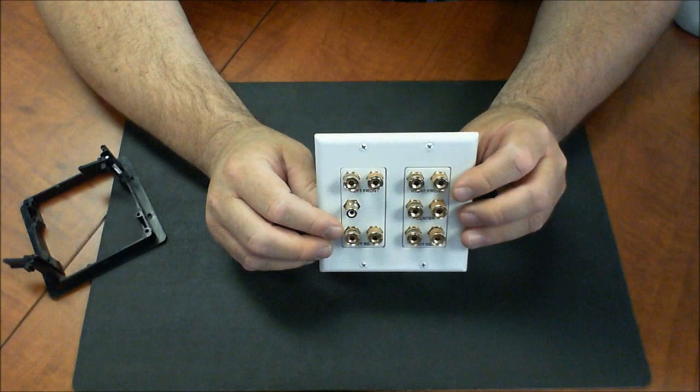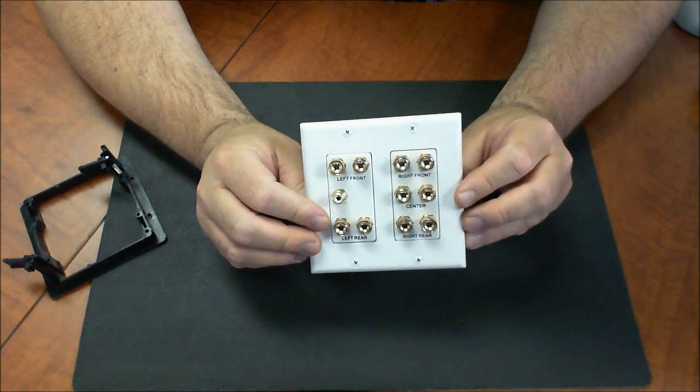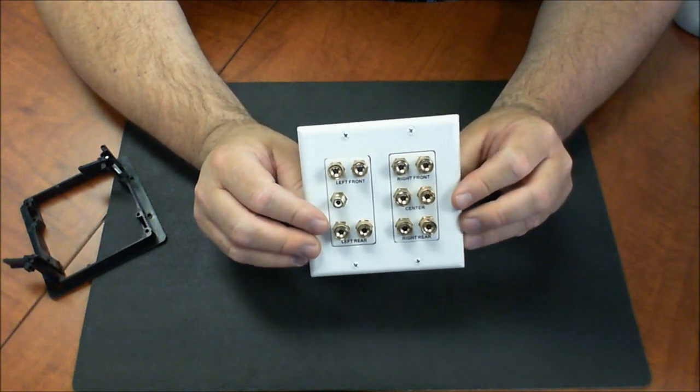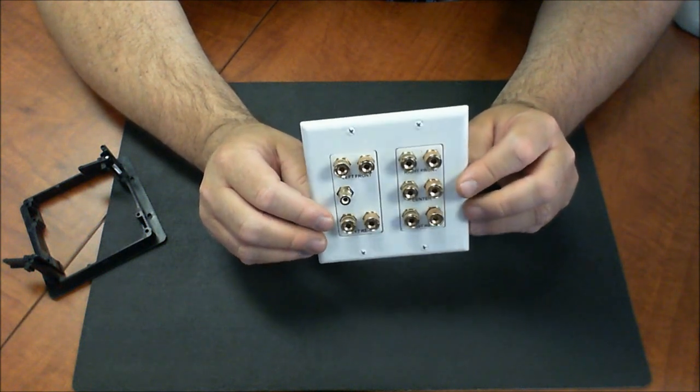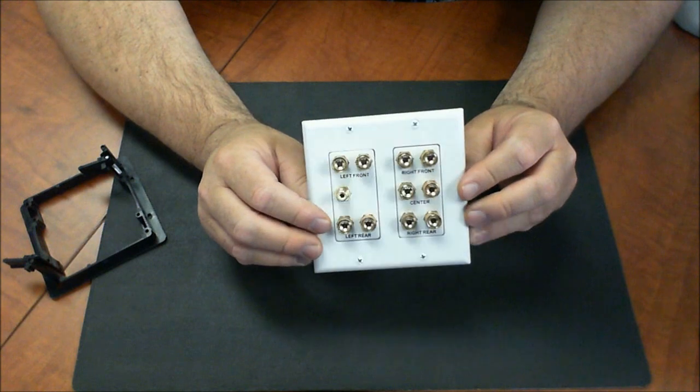Hello there, Eric with CablingPlus.com, and right now I want to show you the Datacom double gang speaker wall plate. It's for 5.1 surround sound applications and it's the Datacom part number 45-0060.